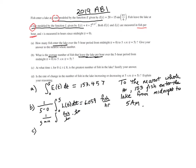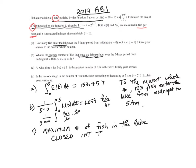Part C asks at what time T in the interval from zero to eight is the greatest number of fish in the lake, and to justify the answer. To find the maximum number of fish in the lake, we would use the closed interval test. But first we need a function that describes the number of fish at time x. Let's go to the next page and do that.